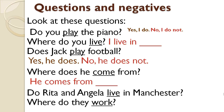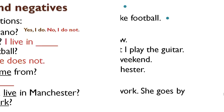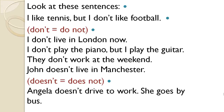But if the noun is female, then the pronoun follows — so it will be 'she.' If I ask, 'Does Angela play the piano or play football?' you would say: yes, she does; or no, she doesn't — because Angela is a female noun. Now look at these negative sentences: I like tennis but I don't like football. Don't equals do not. I don't live in London now. I don't play the piano, but I play the guitar. They don't work at the weekend — that's something usual that happens every weekend. John doesn't live in Manchester. Doesn't equals does not. Angela doesn't drive to work — she goes by bus. That's something regular that happens every day.